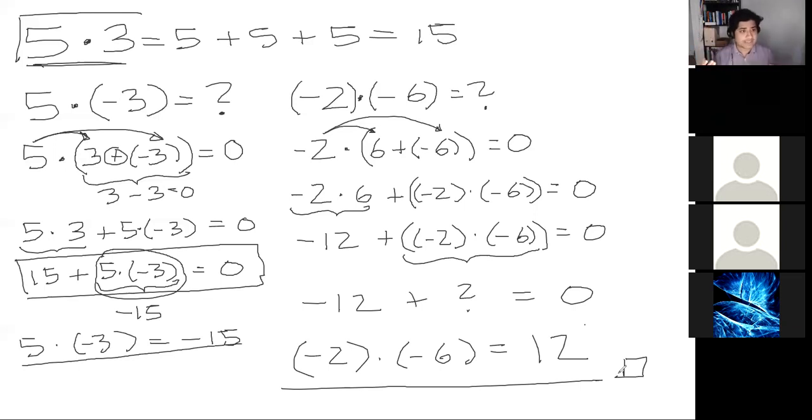So, yeah, there you go. This is a proof for why a negative number times a negative number is a positive number. If you want, you can go through these examples by yourself and kind of prove it by yourself. But yeah. So any questions to this that you guys have?